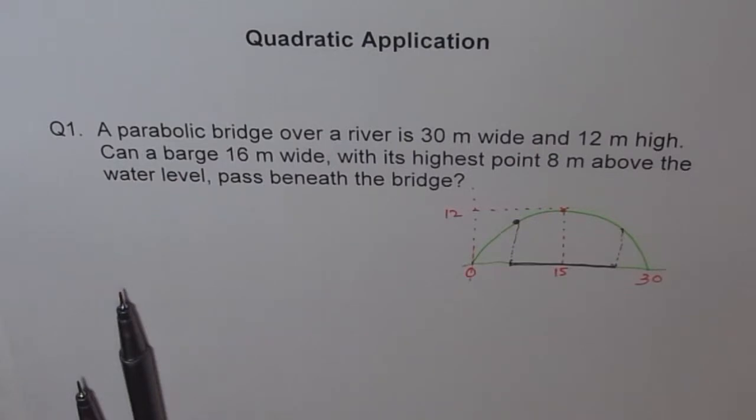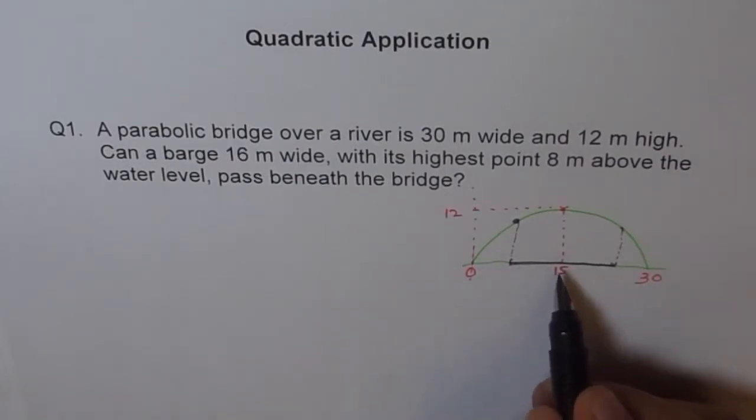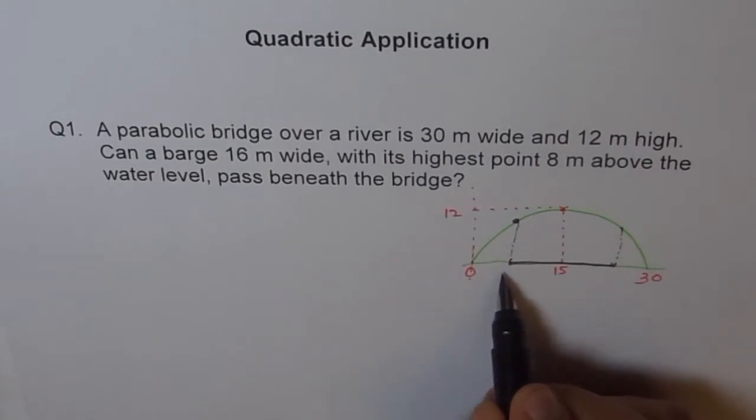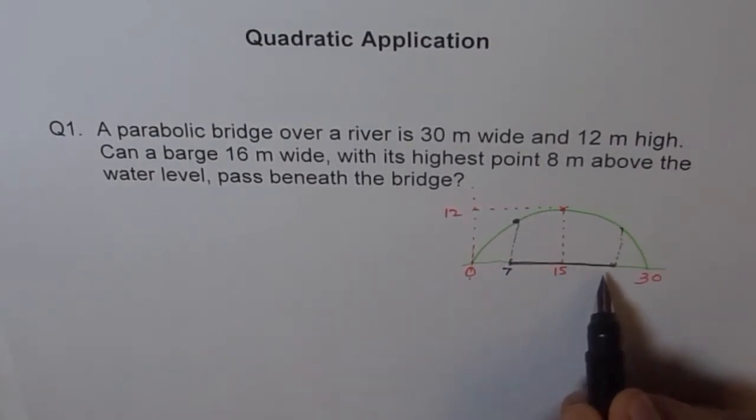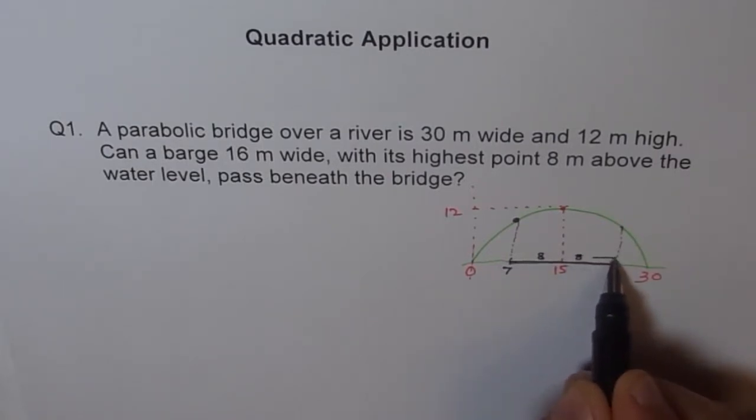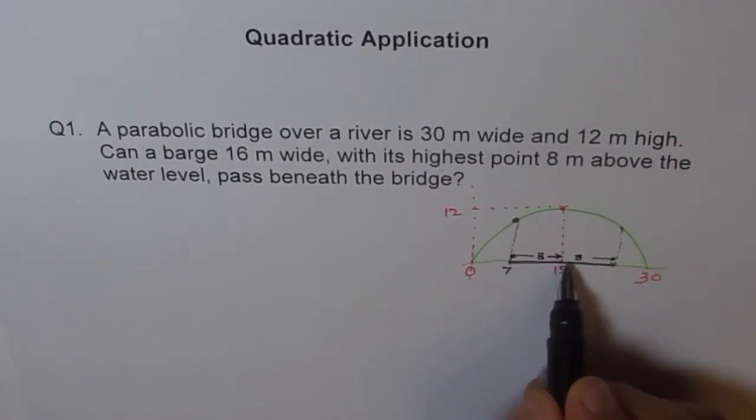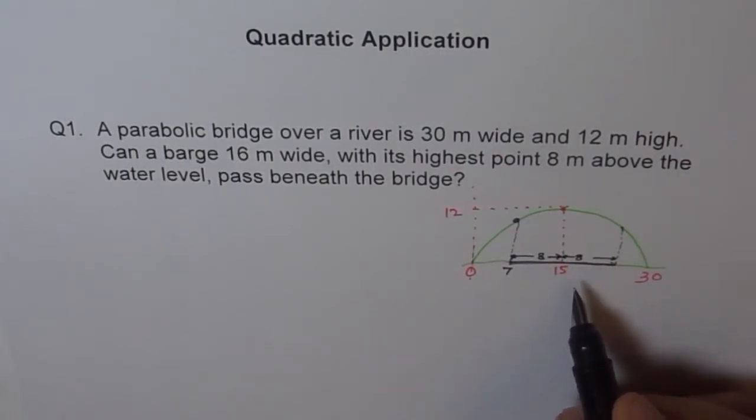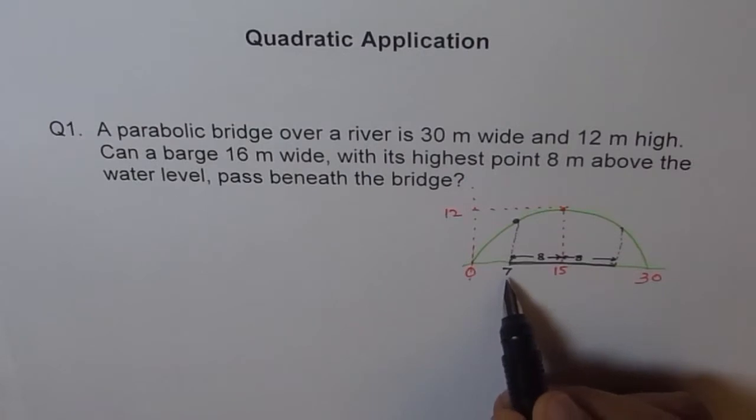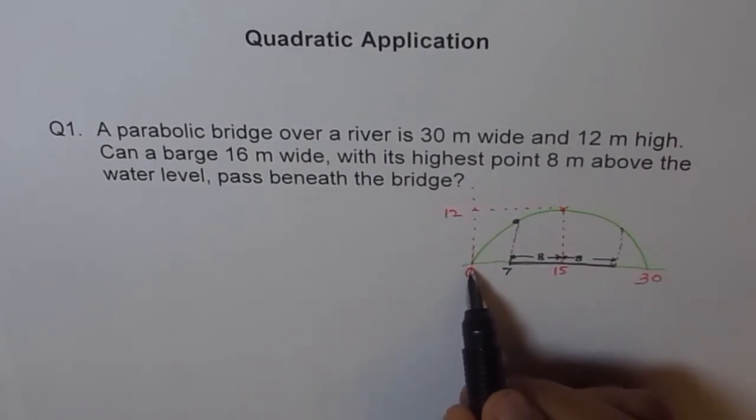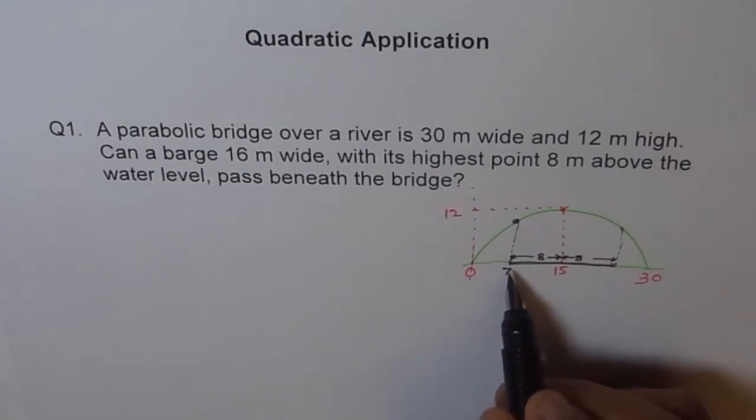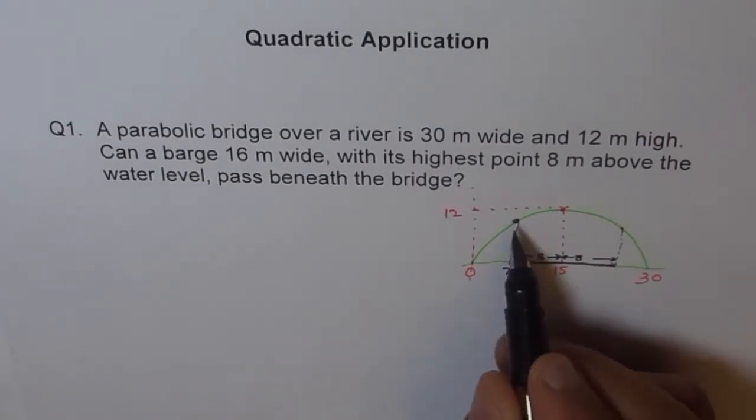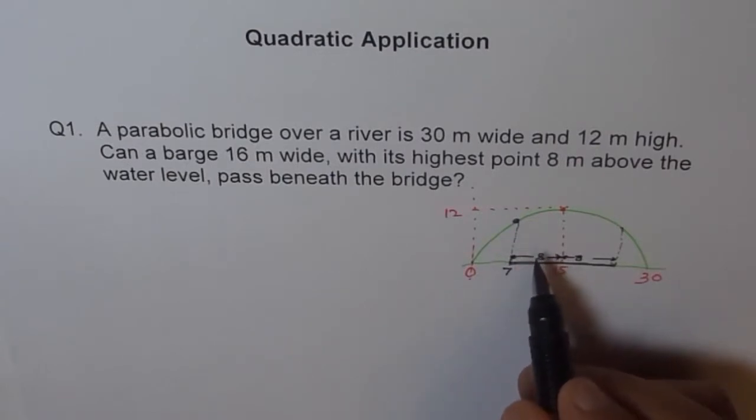First thing is, we need to find the equation of our parabola, and then figure out at this point, which is 8 from here, meaning 7 from here, 15 minus 8. So this point is 7 from there. If you take away 8 from 15, you are left with 7. So if you think this is the origin, then from origin, 7 meters away, the height should be at least 8 meters for it to go through. Otherwise, it can't.